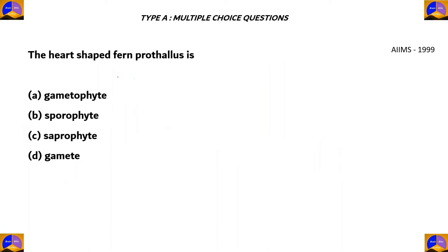This question states: the heart-shaped fern prothallus is A. a gametophyte, B. a sporophyte, C. a saprophyte, and D. a gamete.